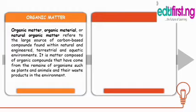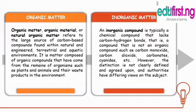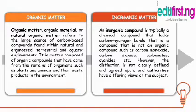Organic matter exists in natural form, while inorganic matter is typically a chemical compound that lacks a carbon-hydrogen bond — that is, a compound that is not an organic compound, such as carbon monoxide, carbon dioxide, carbonates, and cyanides. However, the distinction is not clearly defined and agreed upon, and authorities are still differing on which view to take regarding inorganic matter. You must note that inorganic matter may contain carbon but does not have carbon-hydrogen bonds.